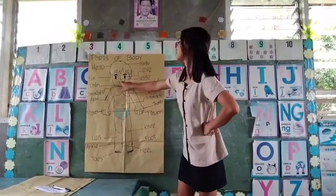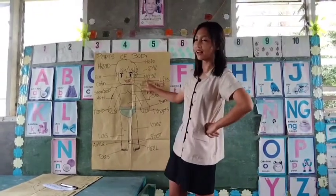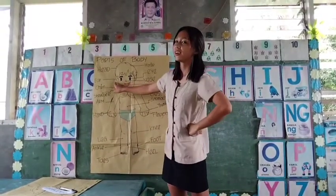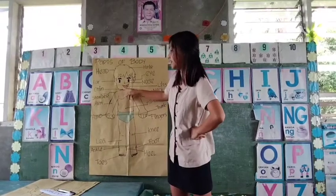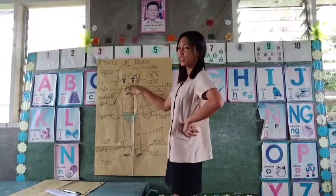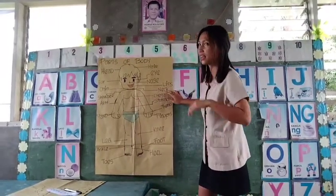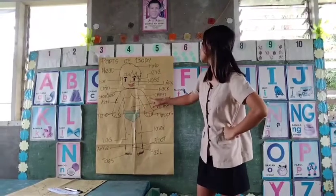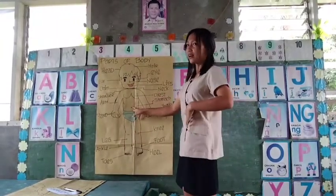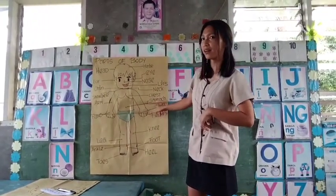Ito naman ay nose. Ito ang importante din para tayo ay makahinga. Ito naman, anong parte ng ating katawan nito? Ito naman ay chin. And then, ito ay ating shoulder. And ito ay ating neck. Tapos, ito naman ang ating chest. At dito naman, anong parte ng ating katawan nito? Ito ay ating stomach. Dito dumadaloy ang ating mga pagkain.